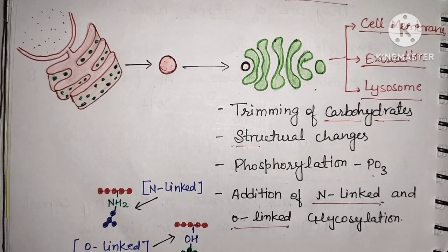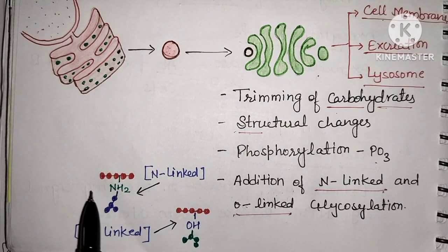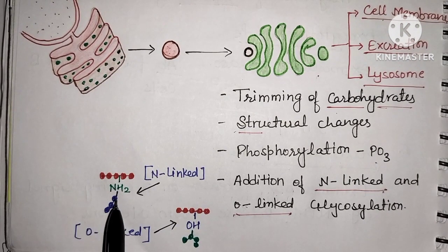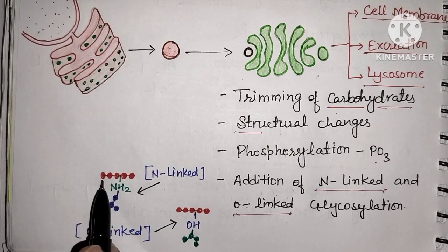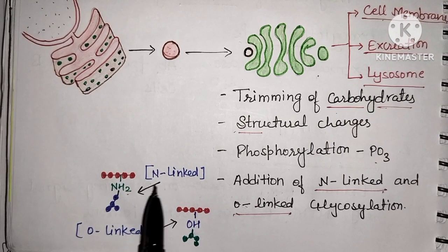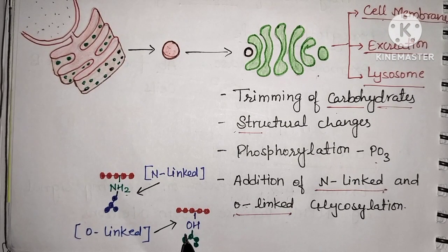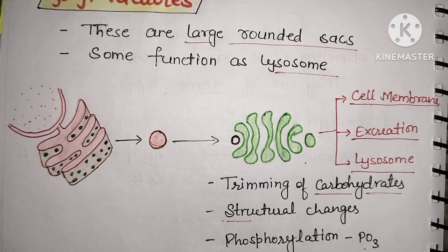For example, carbohydrates are attached to a protein. If the carbohydrate is attached to an amine group, we call it N-linked glycosylation. If it is attached to a hydroxyl group, we call it O-linked glycosylation. These are the key structural modifications performed by the Golgi apparatus.